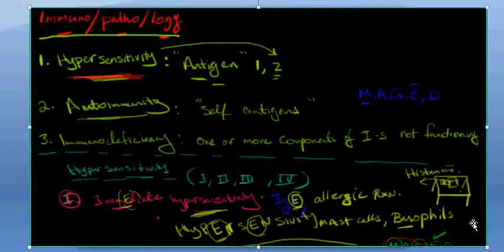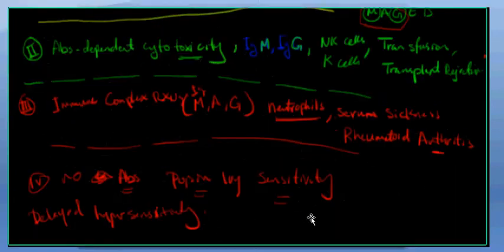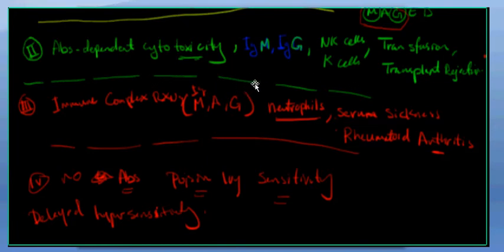Class two is antibody-dependent cytotoxicity, which means it has to do with cytotoxicity. It's about antibodies that make the situation toxic. Those antibodies are IgM and IgG — think of the GM car recall because they're so toxic. So GM stands for the IgM and IgG cytotoxicity antibodies in this type.